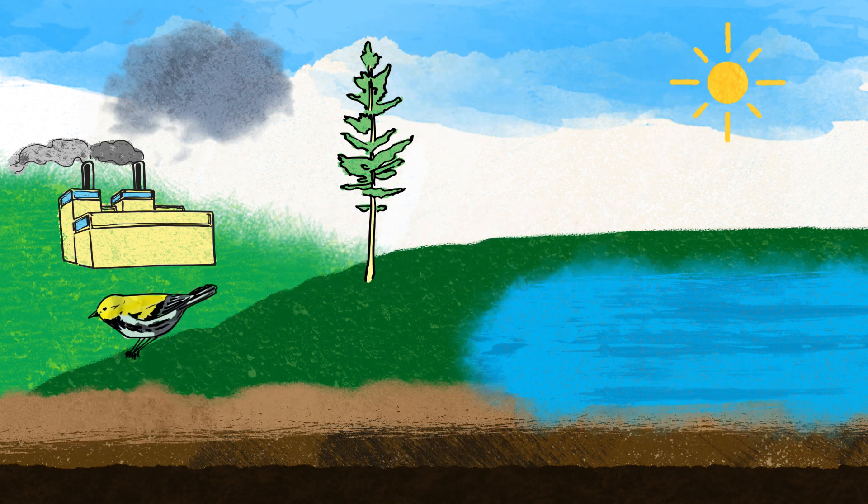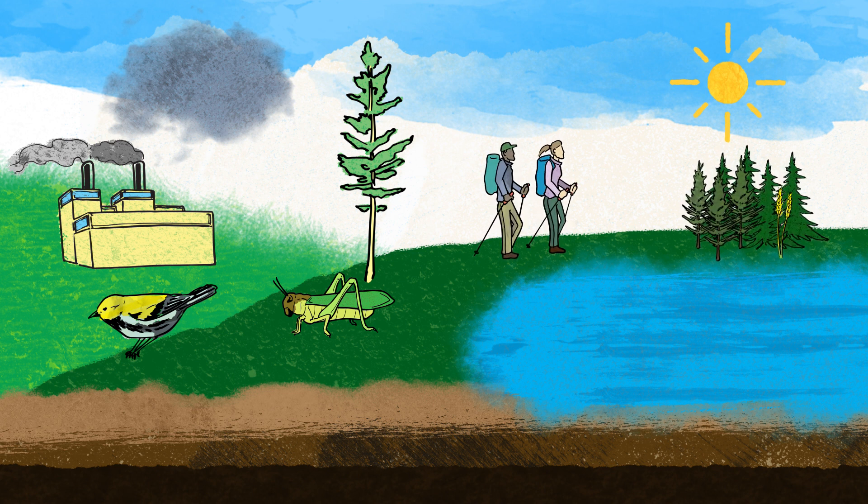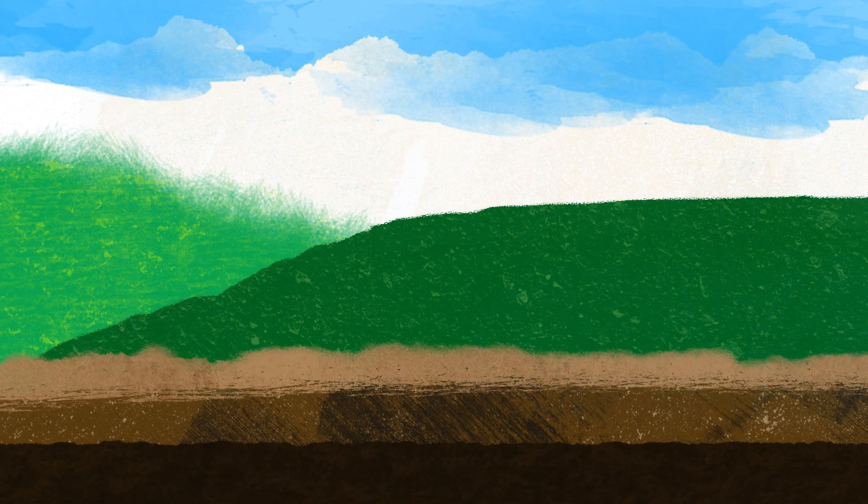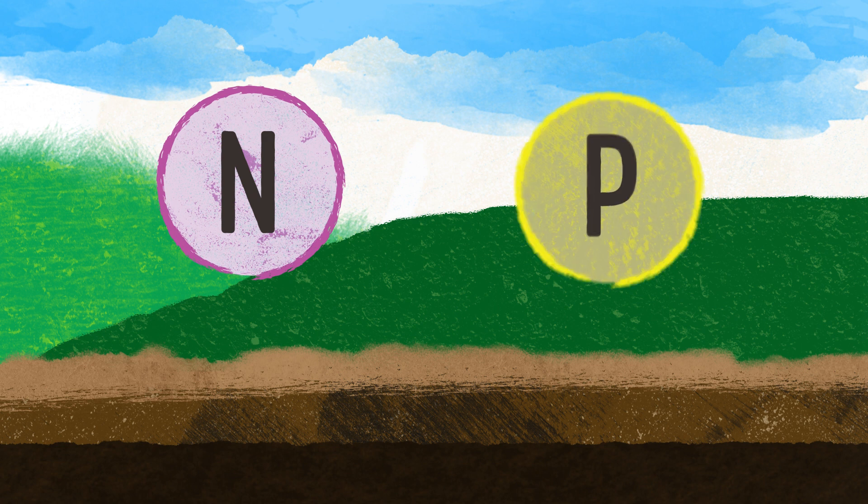Water quality is important because it can affect the health of all living organisms including humans. One aspect of water quality that has a significant influence on aquatic ecosystems is the levels of nitrogen and phosphorus.